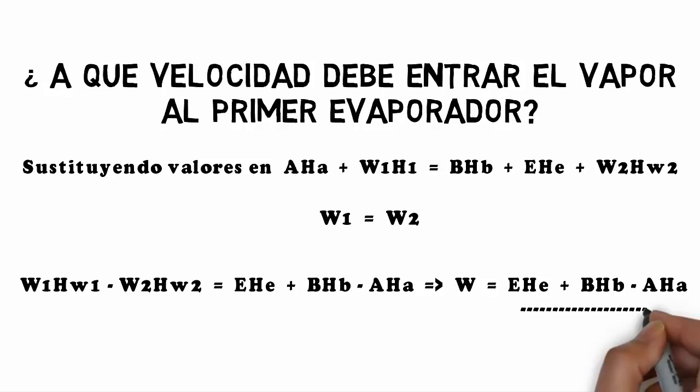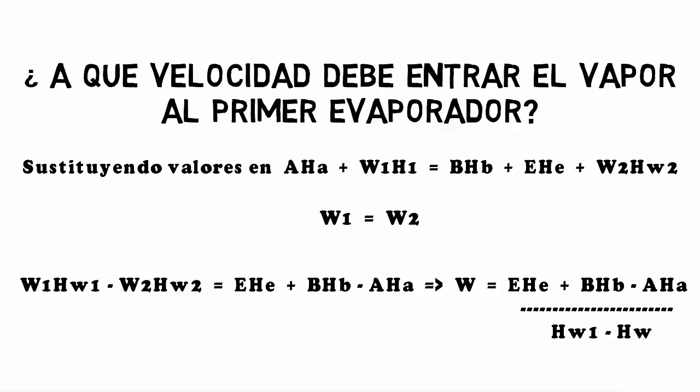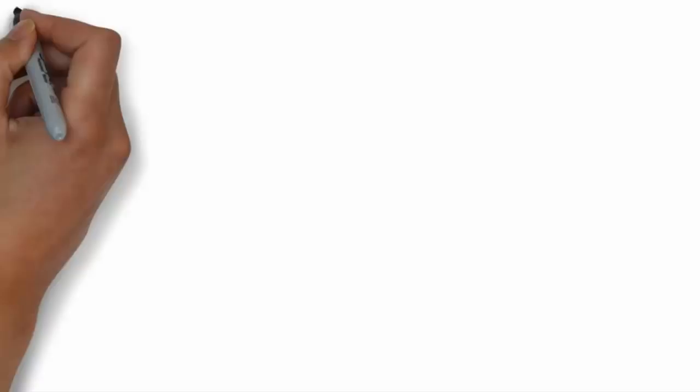Once W is isolated, the equation becomes: W = (E·ΔhE + B·ΔhB − A·ΔhA) / (HW1 − HW2).